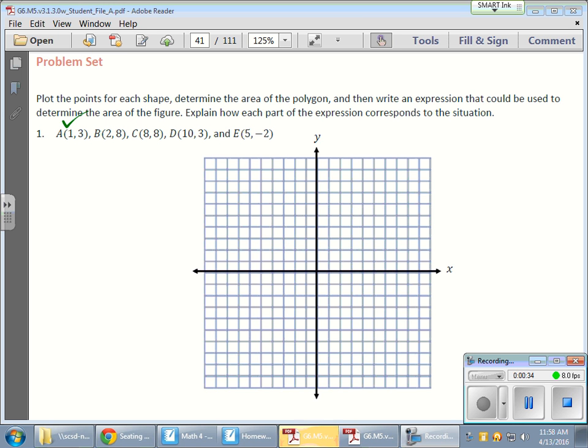I have my coordinate plane, and I have some points. So let's start plotting here. I have A(1,3), which goes right about here. So I'm going to label that A so I know where it is. I have B(2,8), which is 1, 2, 1, 2, 3, 4, 5, 6, 7, 8, which is right over here. That's point B.